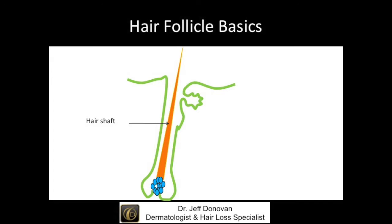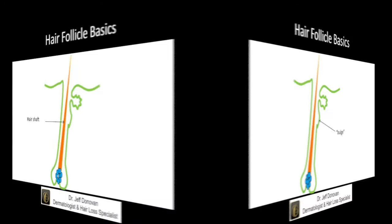The hair shaft is a non-living structure — for most of it, it's made up of keratin. The goal of the hair follicle is to produce this hair shaft. That region at the bottom, shown here in blue, is responsible for producing or manufacturing this hair shaft. And of course, the reason we're all here today is because these hair loss conditions lead to a reduction in hair shafts on the scalp.